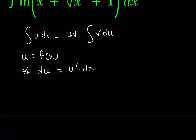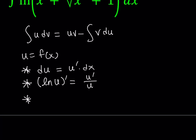Du basically just means the derivative of u multiplied by dx. Of course, if you divide both sides by dx, you get du over dx, which is the derivative, the same as u prime. The second thing I want to talk about is the derivative of the ln function. If you have ln of u and you're trying to differentiate it, it can be written as u prime over u. You differentiate the inside and divide it by the original function — we also call this the chain rule.